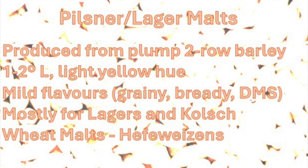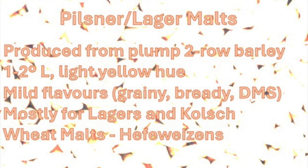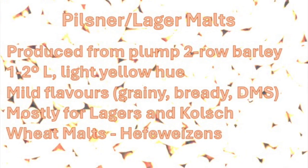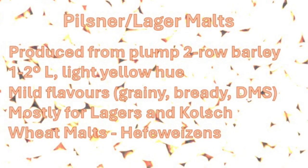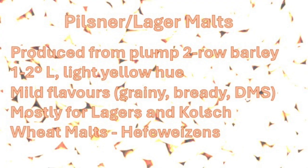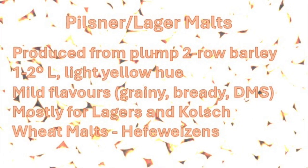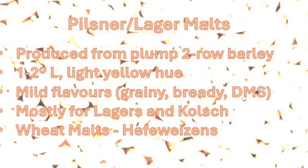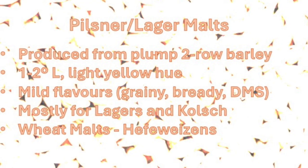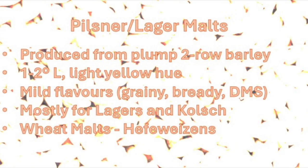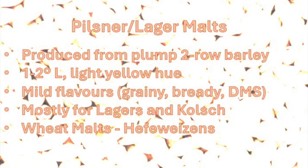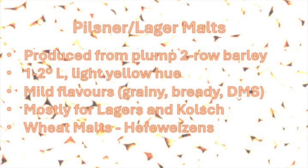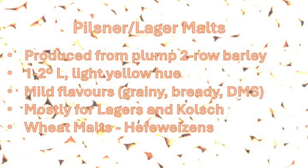Pilsner malts, or lager malts, are produced from plump two-row barley with low protein content. They are steeped to just over 40% moisture, go through cold germination, and are kilned at temperatures over 80°C or just over 175°F. These malts are low in color — one to two Lovibond — with a light yellow hue and very mild flavors such as grainy, bready, or even mild DMS (dimethyl sulfide), which is the cooked corn or canned corn flavor. They are mostly used in the production of different lagers and Kölsch. Even though they are not made from barley, wheat malts have some similar characteristics and are mostly used in the production of German Hefeweizens.